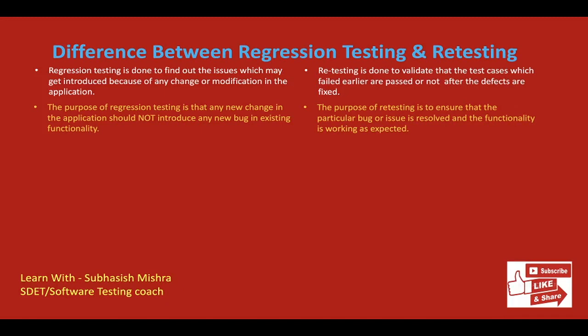The purpose of regression testing is that any new change in the application should not introduce any new bug in existing functionality. The purpose of retesting is to ensure that the particular bug or issue is resolved and the functionality is working as expected. Defect verification won't fall under regression testing — defect verification falls under retesting. In retesting we verify the defect: the test case that was failing, we raised a defect for it, and we are re-verifying the same defect.